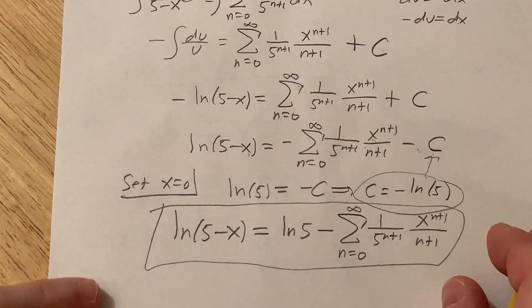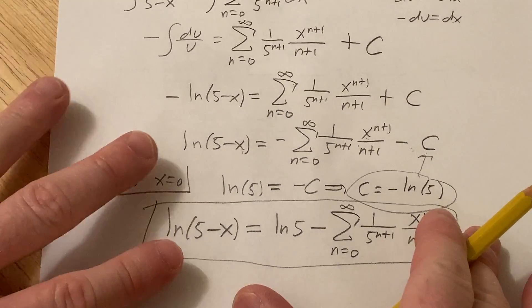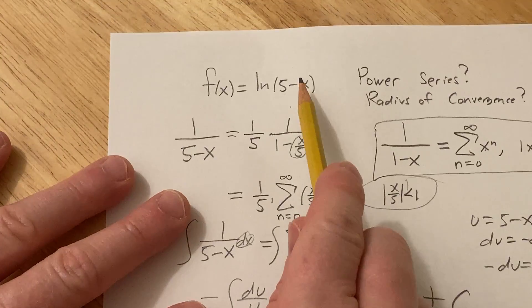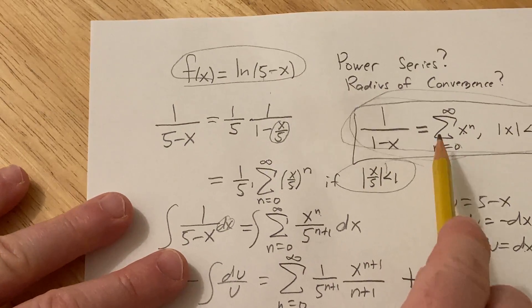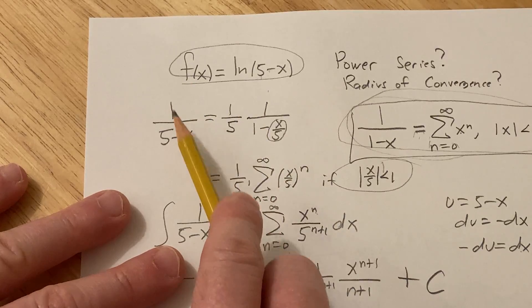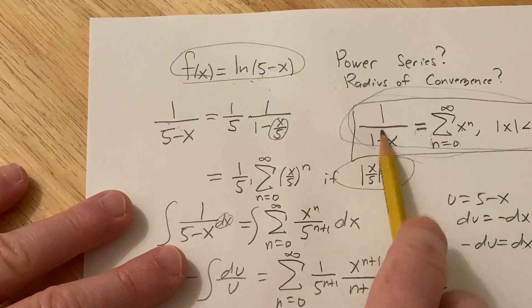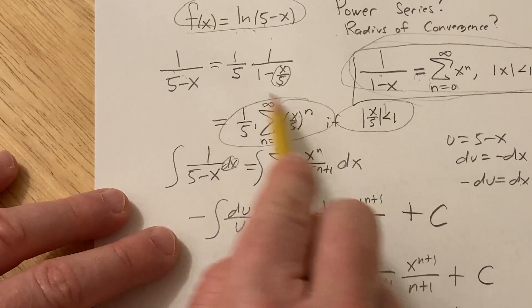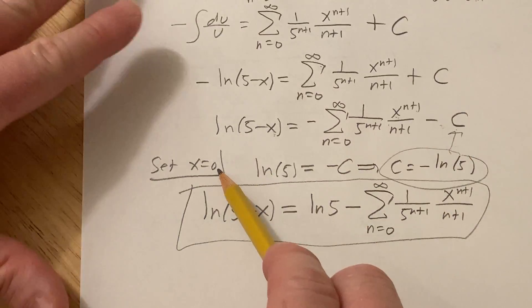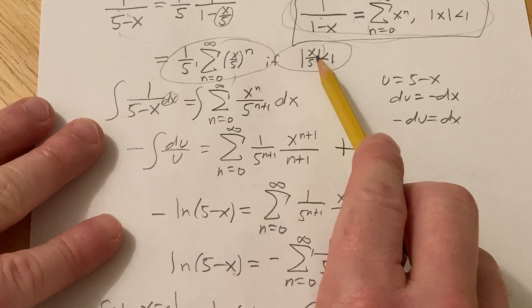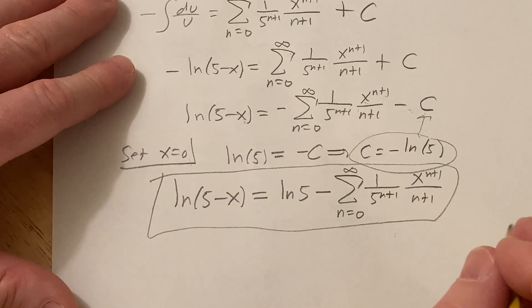This is typically something you'd see near the very end of a Calc 2 course. It's not a really hard problem, but it's harder than the easier ones because you're given ln(5-x) and need a power series. The key insight is recognizing that integrating 1/(5-x) gives negative ln(5-x), so you manipulate 1/(5-x) using the geometric series formula, integrate both sides, then solve for C by substituting x = 0, since 0 satisfies the convergence inequality.